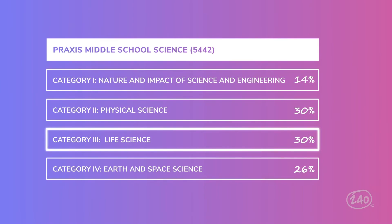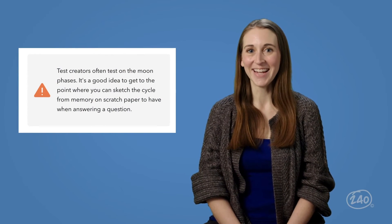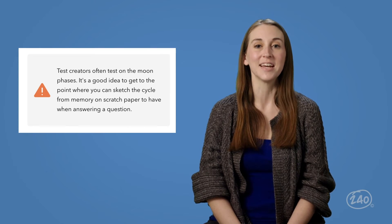We've finished life science. Next up by order of importance is Earth and space science, which breaks down into two subcategories: the Earth in space — covering everything in our solar system and how it relates to Earth — and Earth's systems, covering how everything on Earth works. A big thing in the Earth in space section is the phases of the Moon and the lunar cycle. Make sure you know why the Moon appears differently across the 28-day cycle. As the relative positions of the Earth, Sun, and Moon change, so does the appearance of the Moon to people on Earth. Test creators often test on the phases of the Moon — it's a good idea to sketch the cycle from memory on scratch paper to have when answering a question.